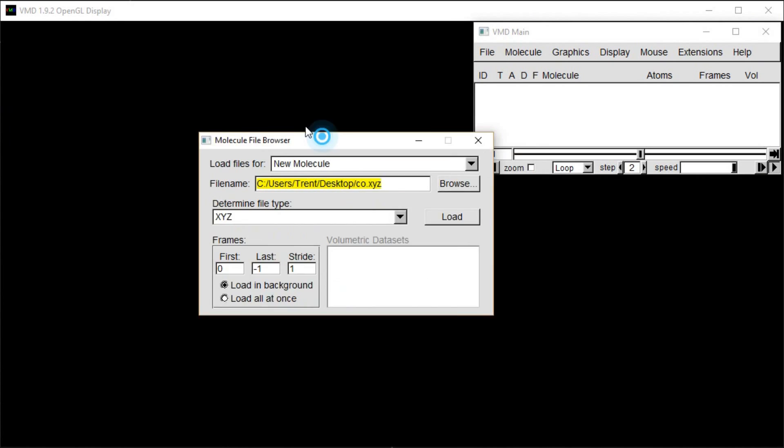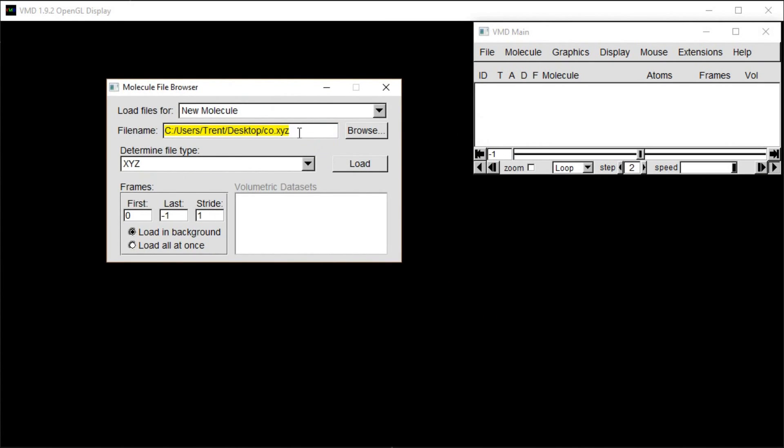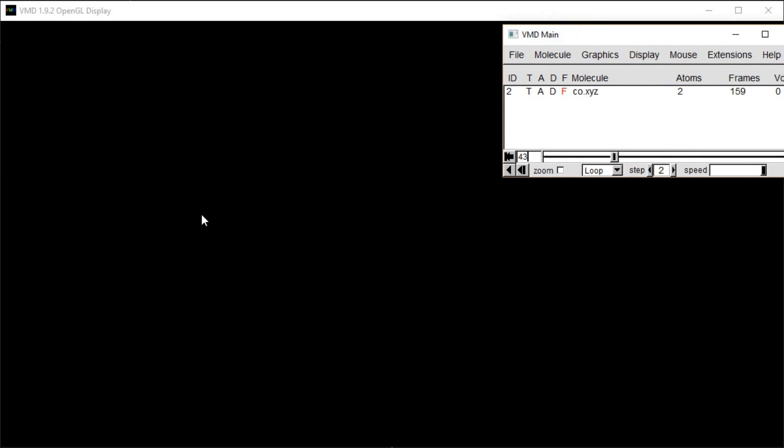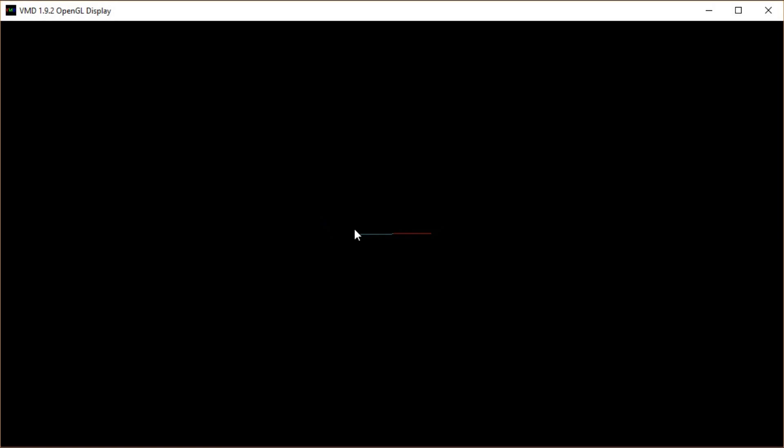This is going to be carbonmonoxide.co. I need to get my menu back, my file browser. Okay, so I've got the file name there, and I'm going to click load. It's going to load all the frames from this animation. Alright, and right now I can't see anything, and that's because the molecule is facing right towards me. So I'm going to click and drag and rotate this.